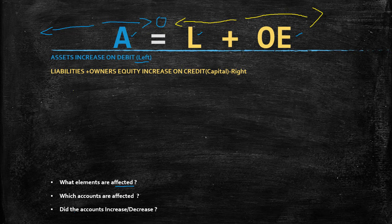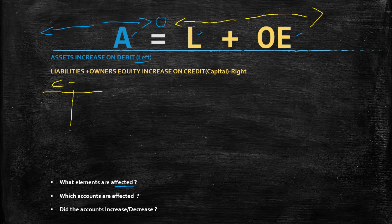This is what we call a T-account. I'm going to show you a couple of examples. Say you're starting a business and you deposit a hundred rands. This is going to affect which element? It's going to affect both the asset and the owner's equity. Which accounts are being affected? The cash account is going to be affected, as well as the capital account — that's the owner's equity account.